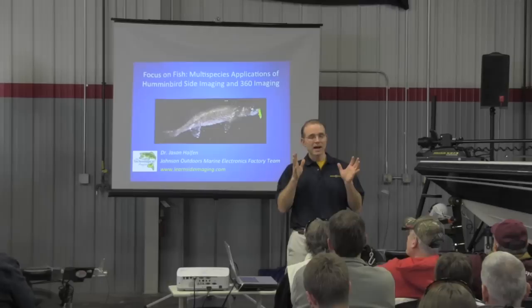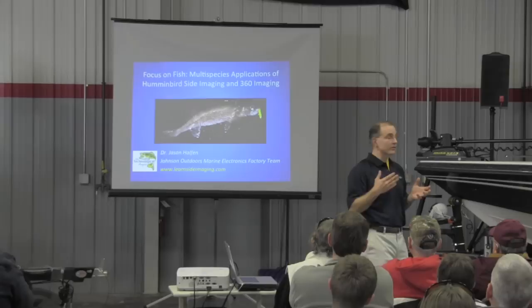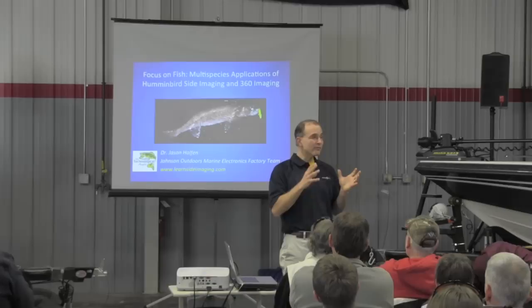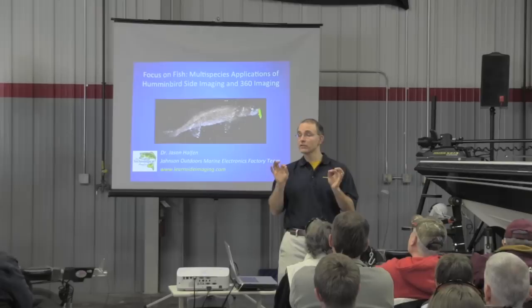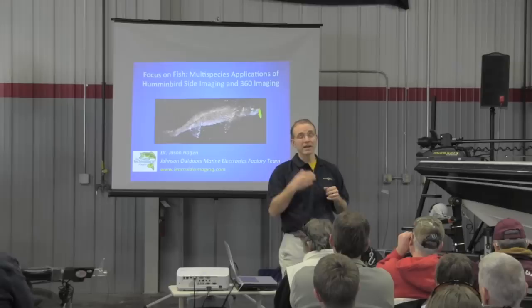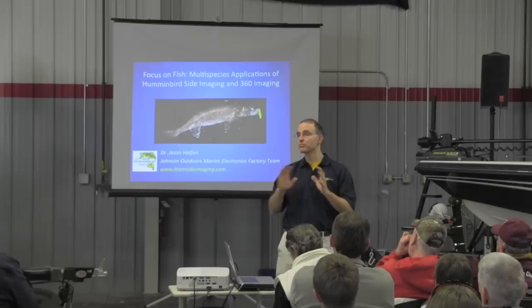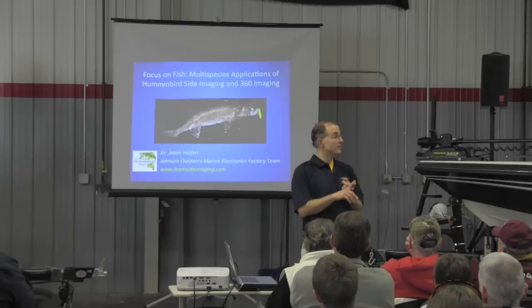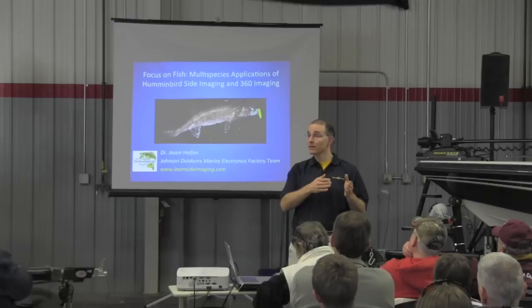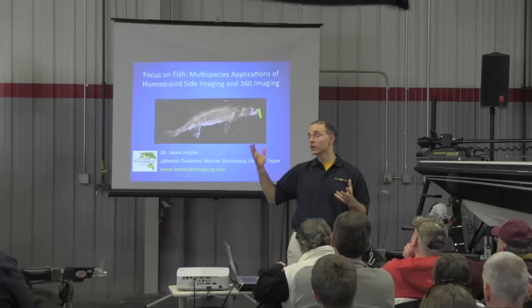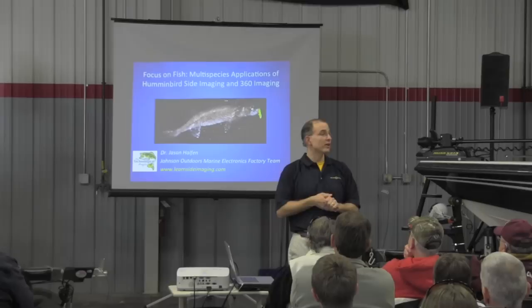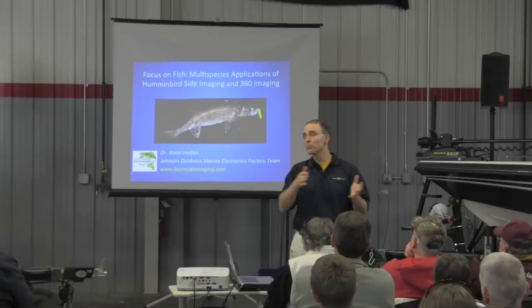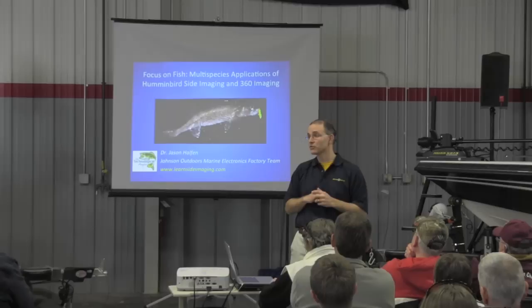When people start to think about advanced imaging sonar technologies available today — whether it's Humminbird side imaging, Structure Scan for Lowrance, or things like that — quite often they think those technologies are specifically associated with structure, and that finding fish is sometimes a little bit of a bonus or maybe hard to do. What I'd like you to leave the seminar with today is the notion that that's completely incorrect. Finding fish with side imaging or 360 imaging is easy. I'm going to show you exactly how easy it is by walking you through a sequence that follows fish from as small as an inch and a half up to large game fish — walleyes, bass — all on Pool 4 of the Mississippi River.